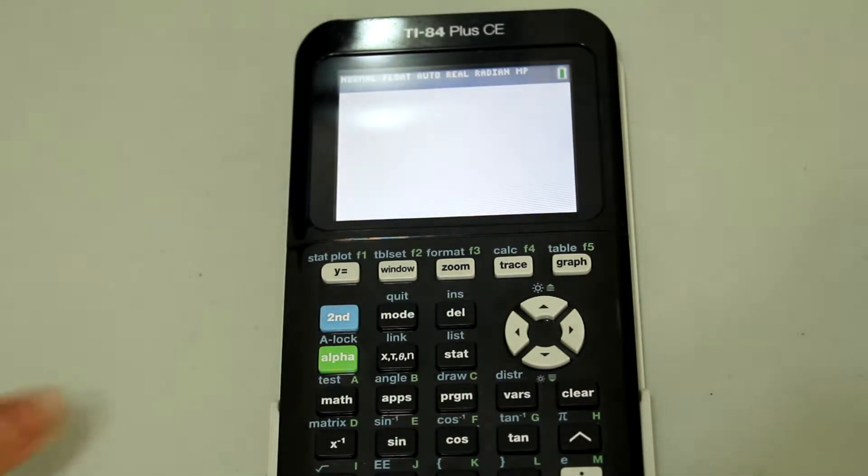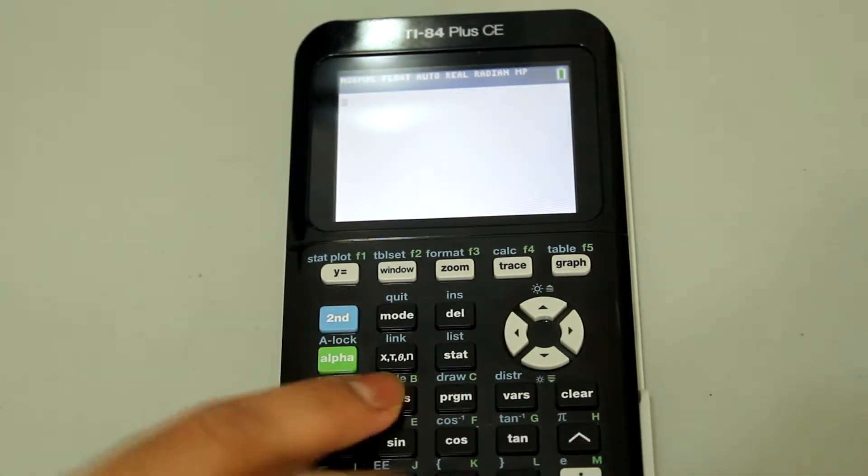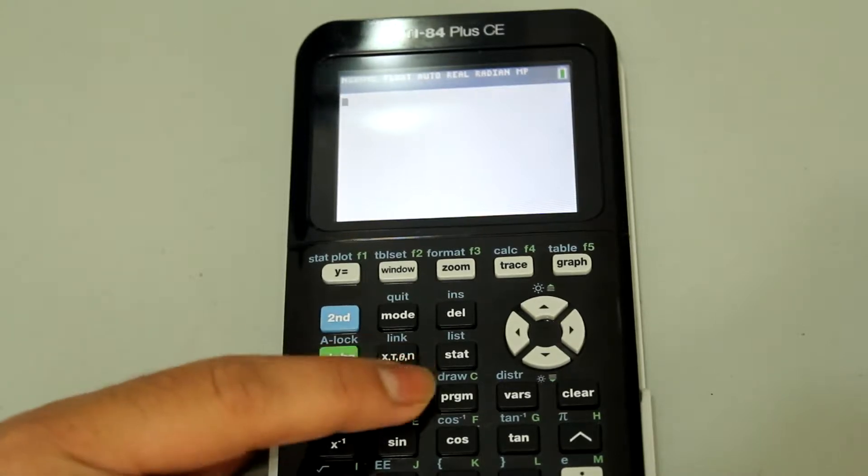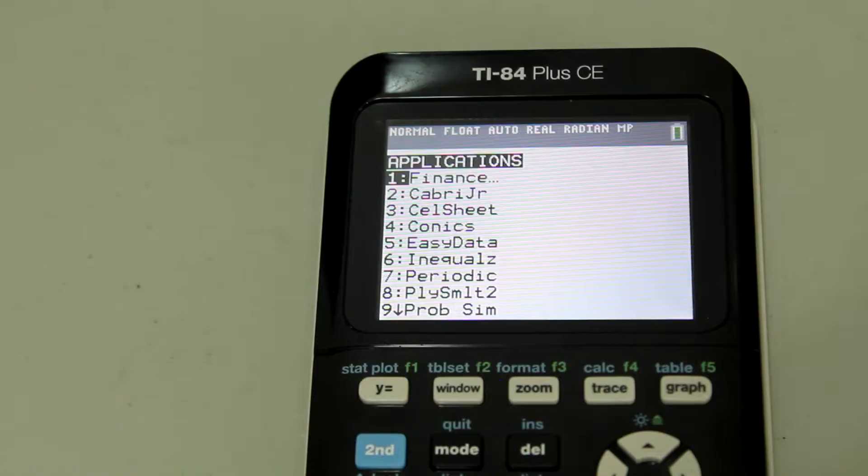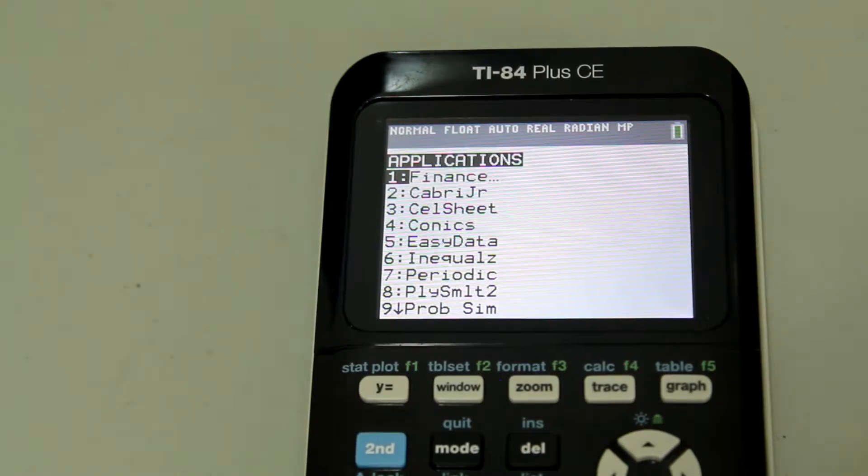To solve the system of equations, once the calculator is on, just hit that button that says apps right here. So I'm going to hit apps. Once you hit the apps button, it's going to take you to a screen that looks like this.